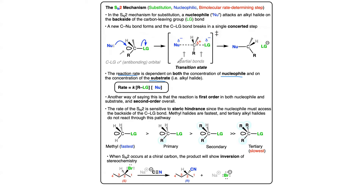In SN2 there is a backside attack, meaning the nucleophile attaches to the carbon from the backside, resulting in inversion of configuration. A partial bond forms at the transition state. The reaction is first order in both the nucleophile and the substrate, making it overall a second-order reaction because the rate depends on the concentration of both.